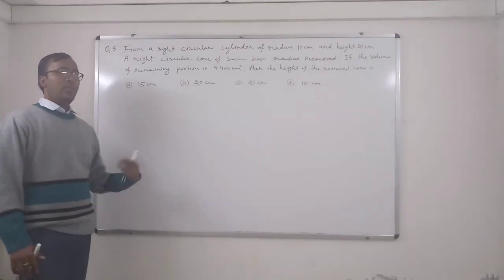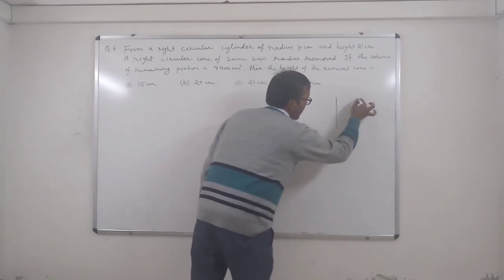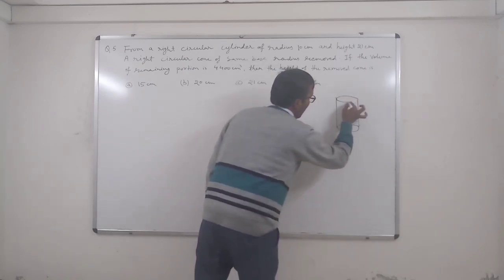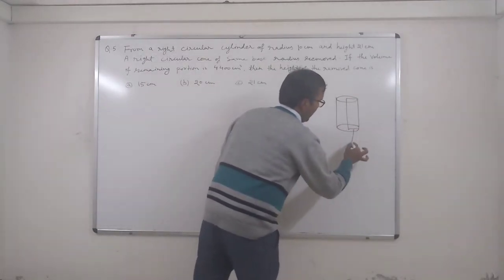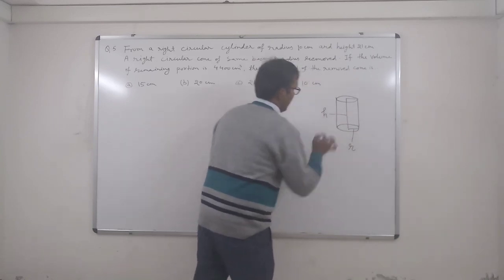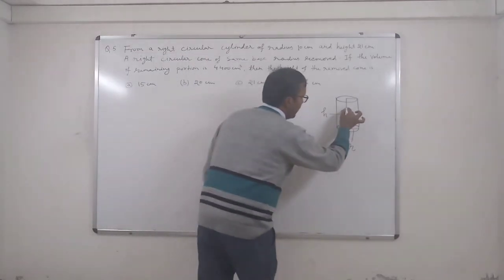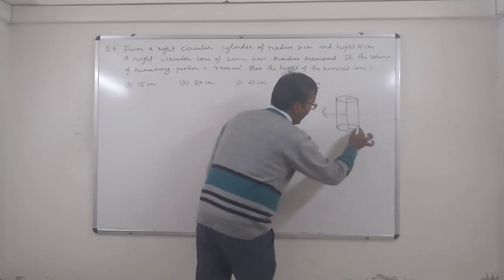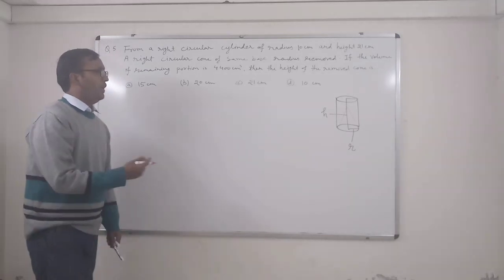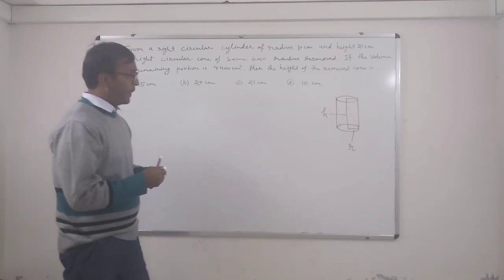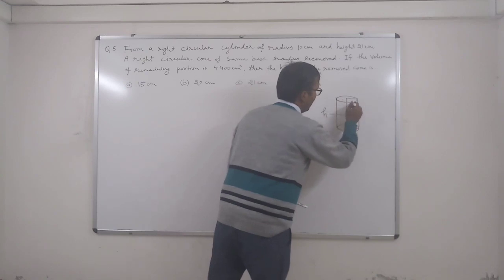This right circular cylinder is solid, so from this we take out one cone. This is a right circular cylinder with radius R and height H. From this solid right circular cylinder we are removing one cone with exactly the same base radius, but we do not know the height — we are supposed to find out the height. We know the volume of the remaining portion.